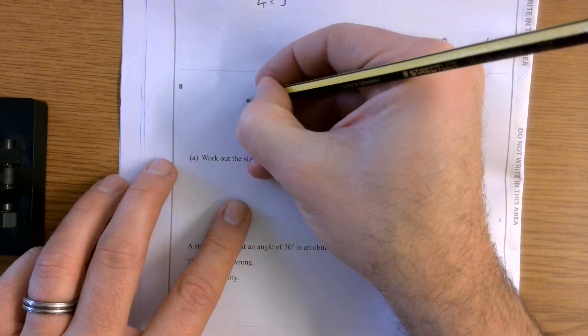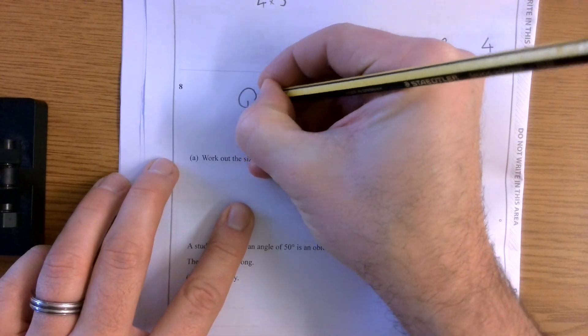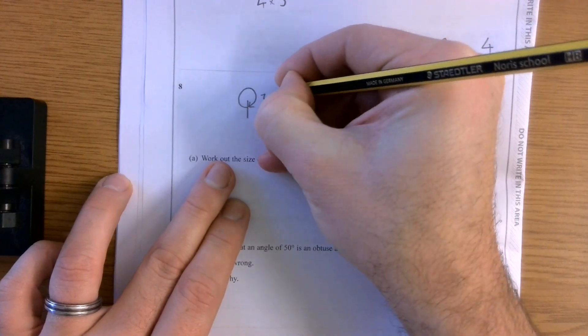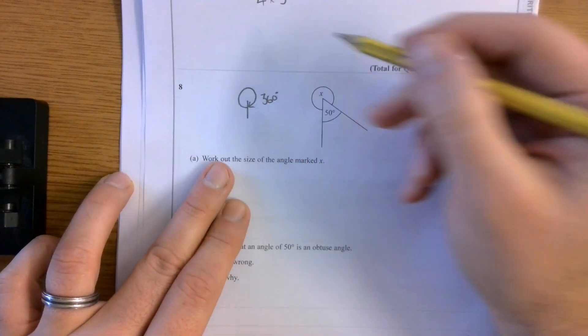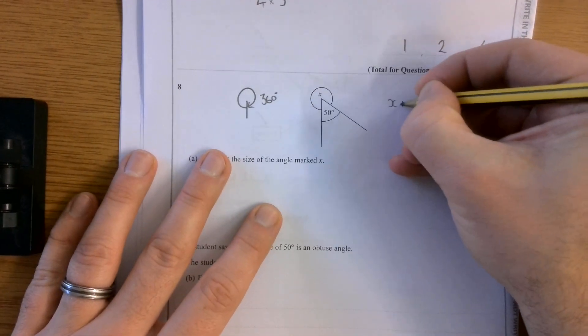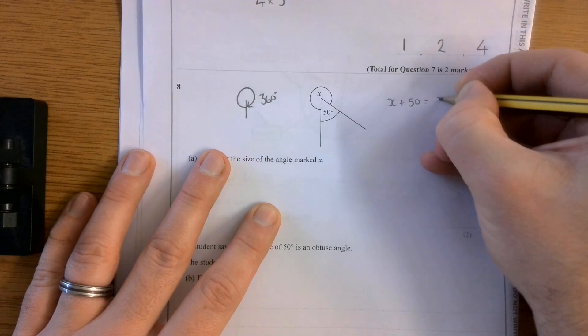All right, this one. So I know angles around a point add to 360 degrees. So I know that a full circle makes 360 degrees. So if I've got x plus 50, that gets me to 360 degrees.